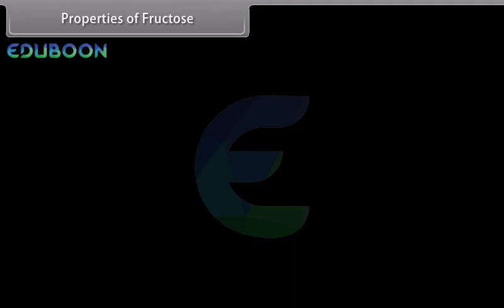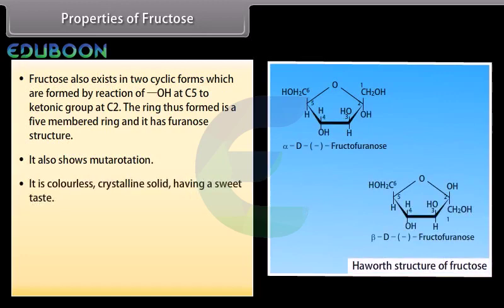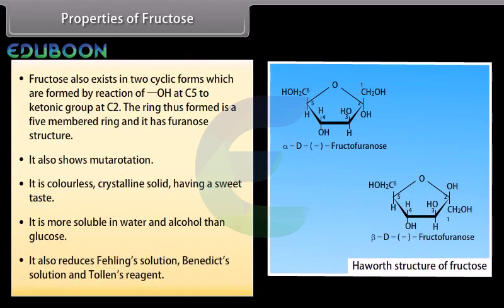The important properties of fructose are: it also exists in two cyclic forms, which are formed by reaction of OH at C5 with the ketonic group at C2. The ring formed is a five-membered ring with furanose structure. It also shows mutarotation. It is a colorless crystalline solid with a sweet taste. It is more soluble in water and alcohol than glucose. It also reduces Fehling's solution, Benedict's solution and Tollens' reagent.